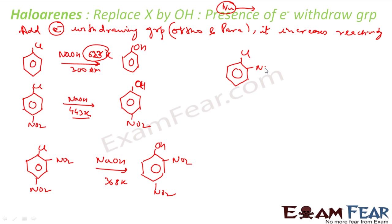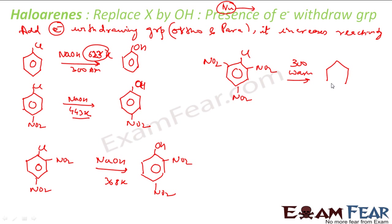Experimentally, with a chlorine and three NO2 groups on the ring, this needs even less temperature — almost 300 Kelvin, just warming — to get the substitution reaction.